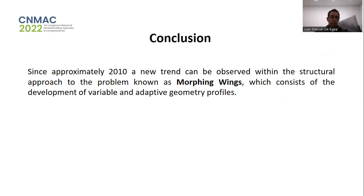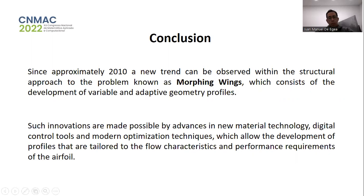Our conclusion is that since approximately 2010, a new trend can be observed within the structural approach to the problem, known as morphing wings, which consists of the development of variable and adaptive geometry profiles. Such innovations are made possible by advances in new material technology, digital control tools, modern optimization techniques, and artificial intelligence, which allow the development of profiles tailored to the flow characteristics and performance requirements of the airfoil.